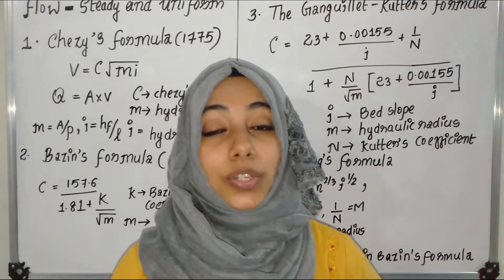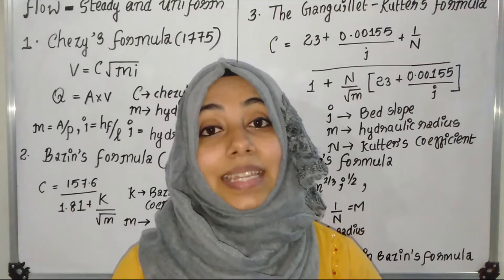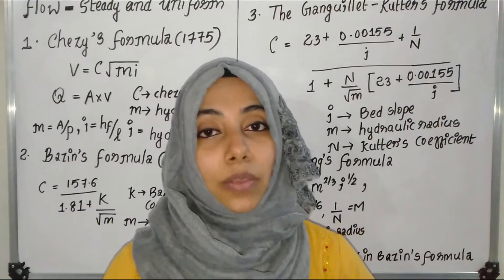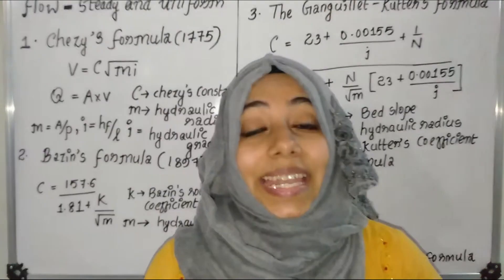M is equal to hydraulic mean radius, that is wetted area to wetted perimeter. M is equal to A by P.